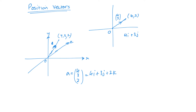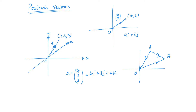Position vectors become quite useful when we want to find vectors that join two points together, because we can always go from one vector back to the origin and then up the next vector. So if I have points A and B and I want to find the vector from A to B, I can go to the origin and then back from the origin to B. That's effectively AO plus OB, which gives the vector AB. And AO will be the same as minus OA. So position vectors, which bring the origin into our calculations, become quite important.